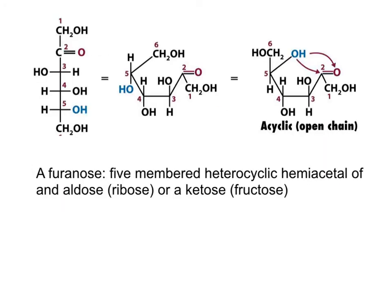The reaction between the hydroxyl on carbon number 5 of fructose and the carbonyl, carbon number 2, will also produce a cyclic stable structure. But in this case, that will be a 5-membered ring, which is called a furanose.